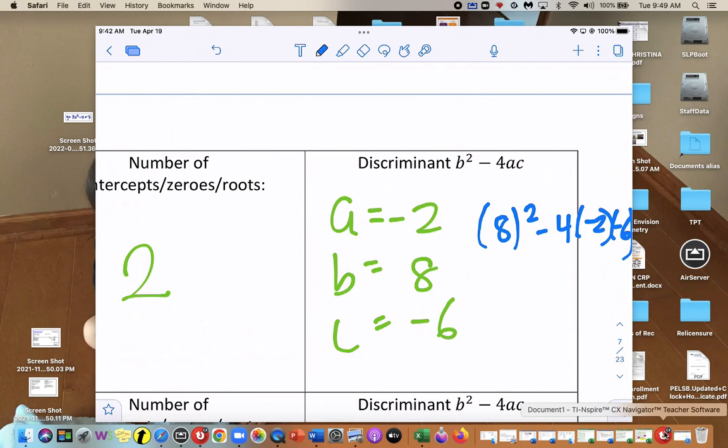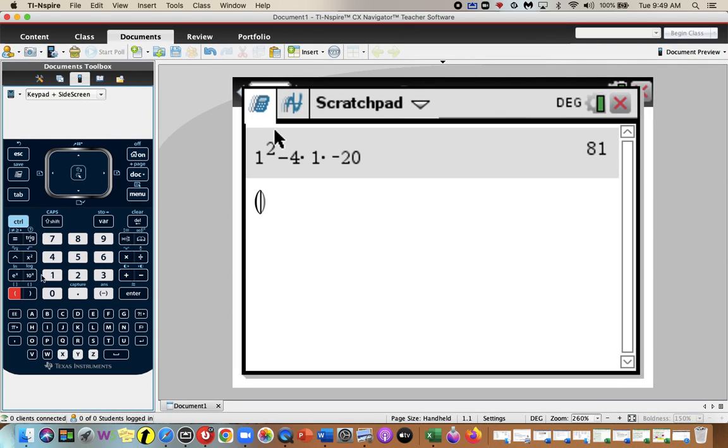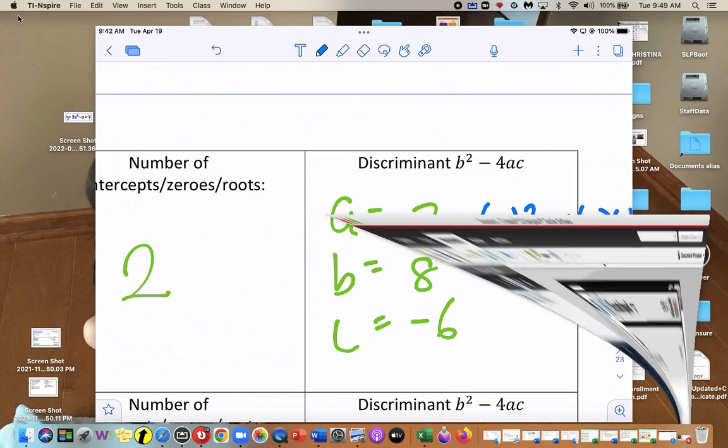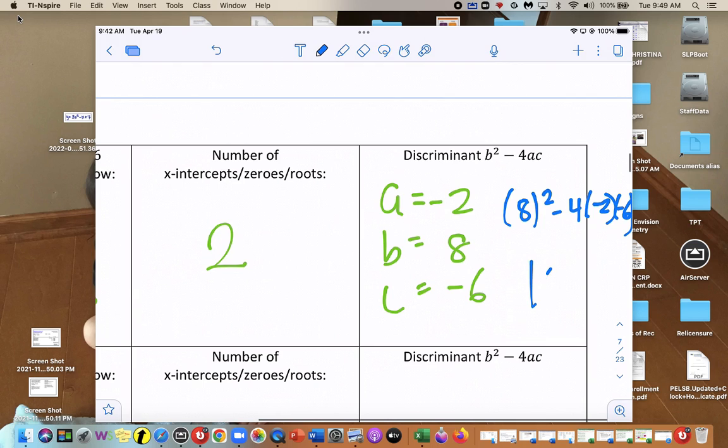We'll squeeze that in there and then type it in. So 8 squared minus 4 times negative 2 times negative 6. And we get 16 for our discriminant.